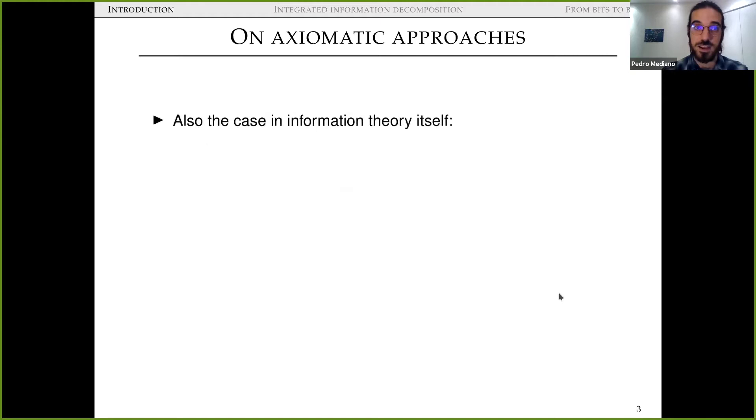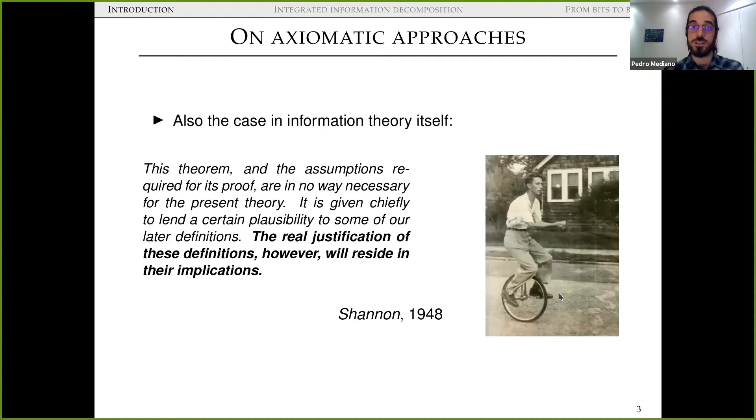And talking about information theory in particular, Claude Shannon in his seminal 1948 paper, Shannon depicted here absolutely killing it on the unicycle, he says, after proving the theorem that the formula for entropy uniquely follows from some axioms, he says this theorem and the assumptions required for its proof are in no way necessary for the present theory. It is given chiefly to lend a certain plausibility to some of our later definitions, but the real justification of these definitions, however, will reside in their implications. So the axioms are basically, being a bit blunt, they're a bit worthless in and of themselves. They only matter insofar as they help us solve real scientific and engineering questions in the case of Shannon himself.